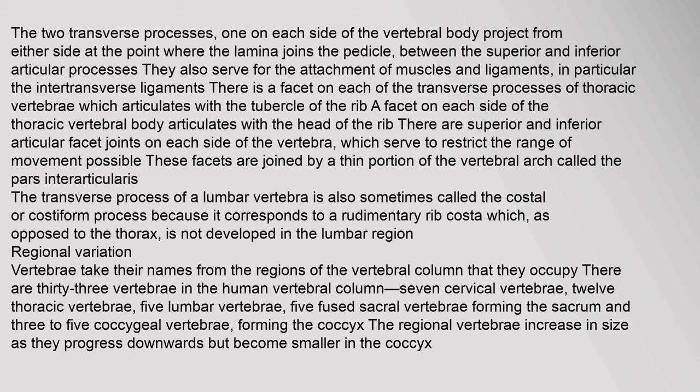Vertebrae take their names from the regions of the vertebral column that they occupy. There are 33 vertebrae in the human vertebral column: 7 cervical vertebrae, 12 thoracic vertebrae, 5 lumbar vertebrae, 5 fused sacral vertebrae forming the sacrum, and 3–5 coccygeal vertebrae forming the coccyx. The regional vertebrae increase in size as they progress downwards but become smaller in the coccyx.